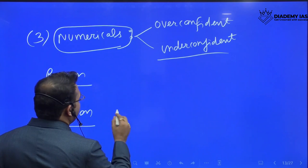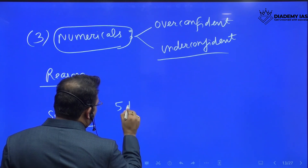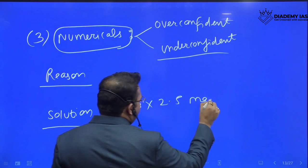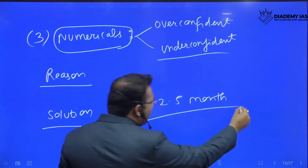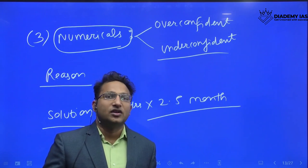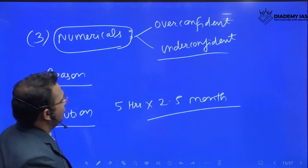Now, solution. The solution is that you devote some time—I will say five hours for two and a half months—and your numerical will be good. Whether you are from CA background or non-CA background, this much time you should devote, and you will get very good marks in the paper of numerical.